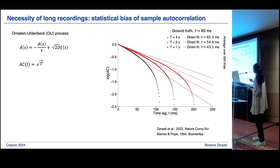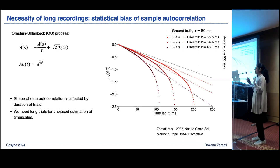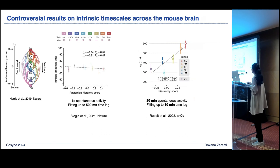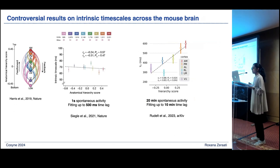This is a known statistical problem called statistical bias in the sample autocorrelation. The shape of the data autocorrelation largely depends on how much data is available — the trial duration — and we need long trials for unbiased estimation. Going back to the earlier picture, the difference between the two contradictory mouse brain papers might at least partly be due to this bias: one uses one-second spontaneous activity, while the newer one uses 20 minutes, likely yielding less biased estimates.